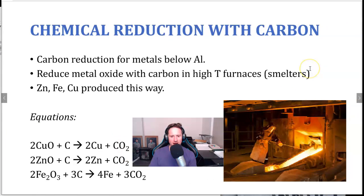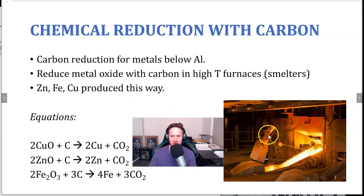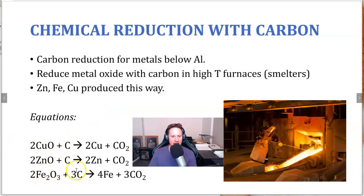Chemical reduction with carbon — another way to extract metals — is for metals below aluminium on the activity series. You reduce the metal oxide with carbon in high-temperature furnaces called smelters. Zinc, iron, and copper are produced this way. For each metal — copper oxide, zinc oxide, iron oxide — you're adding carbon and reacting at high temperatures. The oxygen transfers to the carbon, so carbon dioxide is always a product and you get the pure metal. Starting with an oxide, reacting with carbon in a smelter, produces the metal and carbon dioxide.